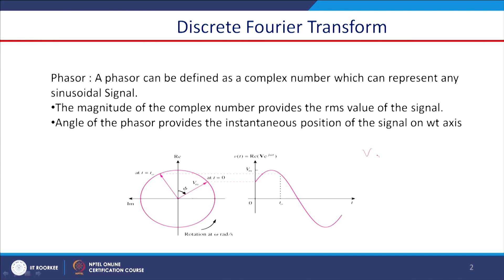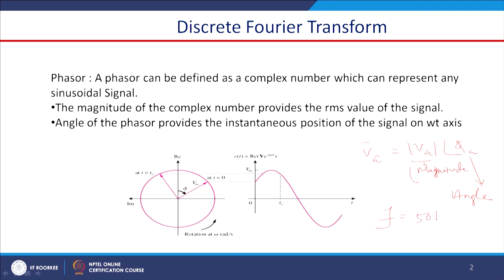How do we define a Phasor? A Phasor such as V_A has a magnitude and an angle — these two together form the Phasor. When we talk about a Phasor, the frequency is also important. If the fundamental frequency is 50 Hz, then at what frequency the Phasor is calculated matters, because if the frequency varies, the magnitude and phase angle values will change. At a particular frequency, the magnitude and phase angle together are called the Phasor.